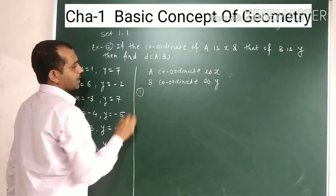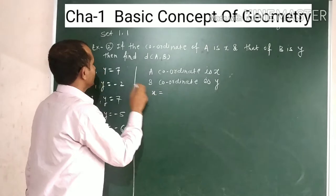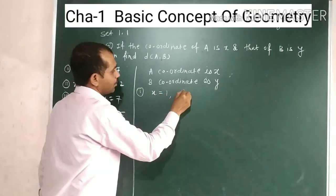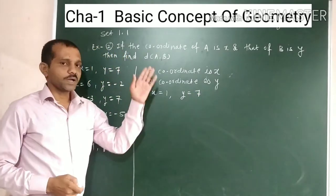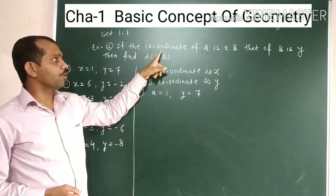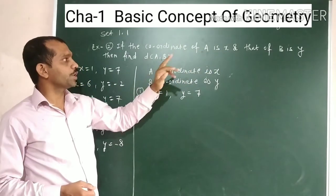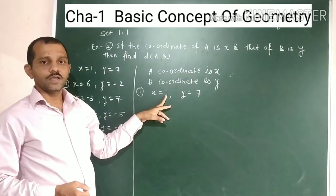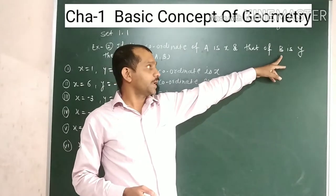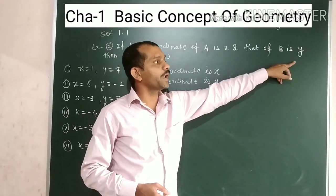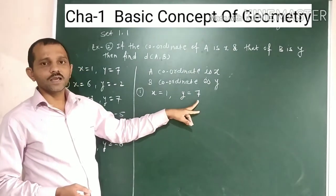We will start the first example. In this example, x is equal to 1 and y is equal to 7. The coordinate of point A is x, and the x value is 1. The coordinate of the other point B is y.